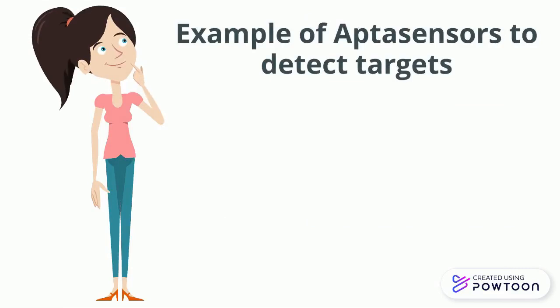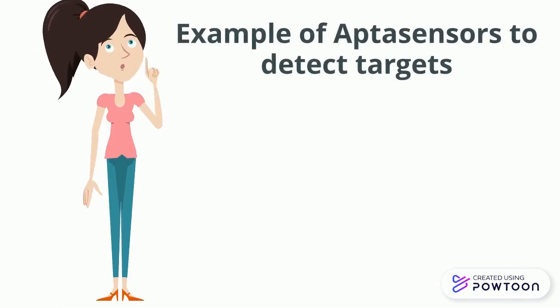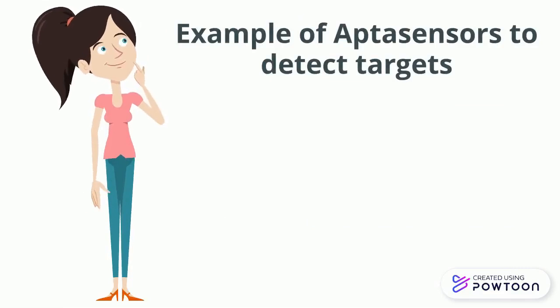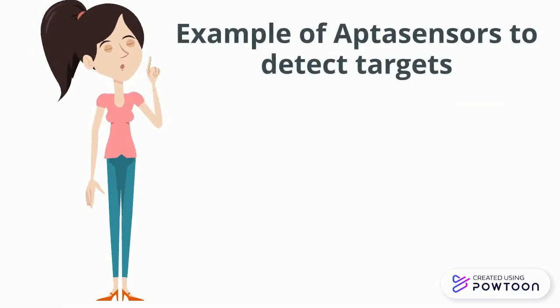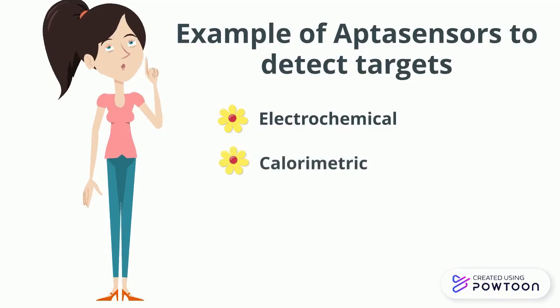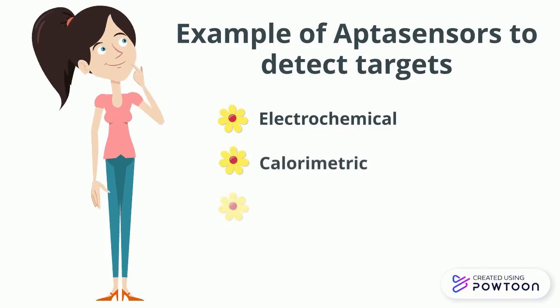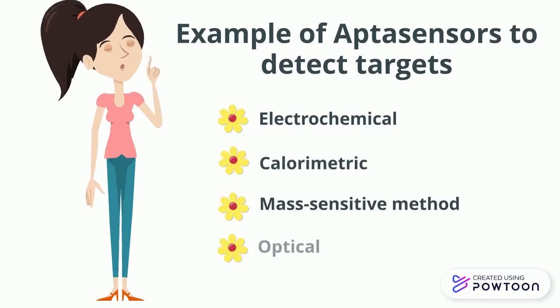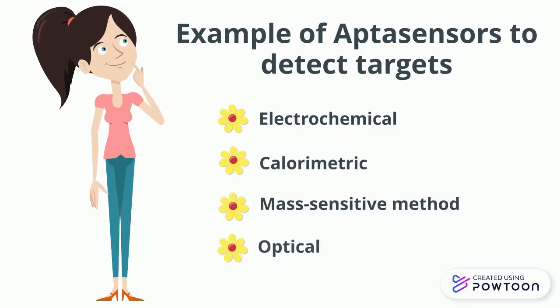The examples of aptamers used to detect targets include electrochemical, colorimetric, mass-sensitive methods, and optical methods.